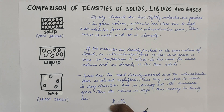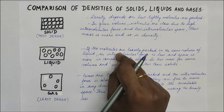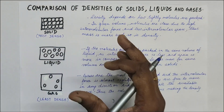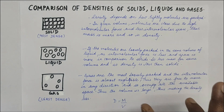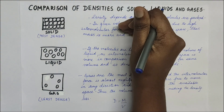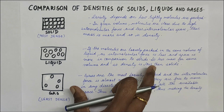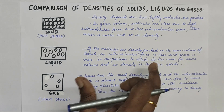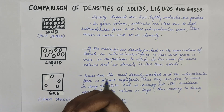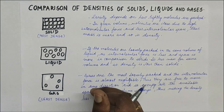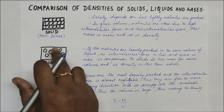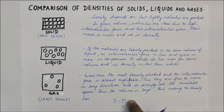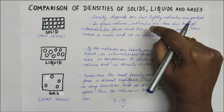If the molecules are loosely packed, as in the case of liquids, comparing the same volume of solid and liquid, the intermolecular force becomes less and the space is more. So in comparison to the solid, the mass will obviously become less because there are fewer molecules, and when the mass becomes less, the density will obviously become lower. So compared to solids, liquids will have less density.